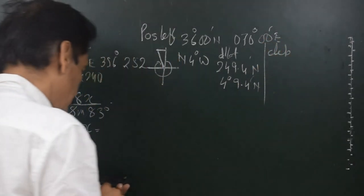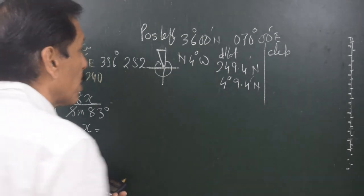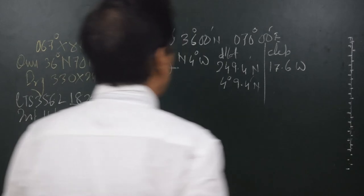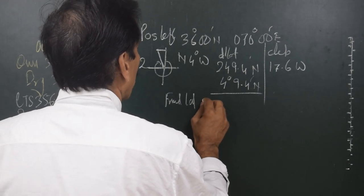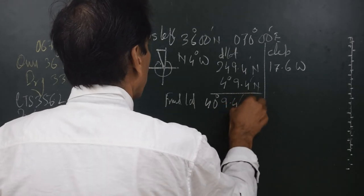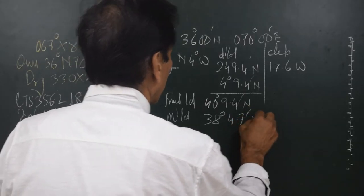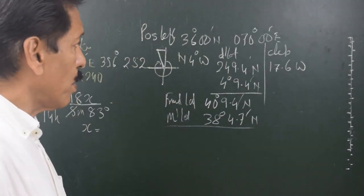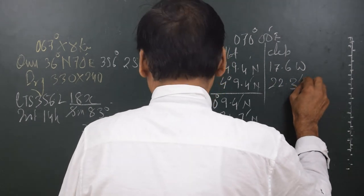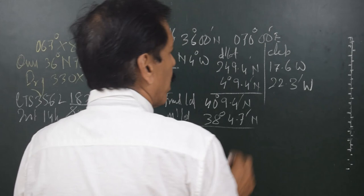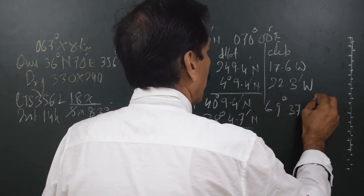Departure = 252 × sin(4°) = 17.6 minutes west. Mean latitude = 38°04.7'N. The purpose of mean latitude is to convert departure into DLONG: DLONG = 22.3 minutes west. Since longitude is east and DLONG is west, we subtract: 70°00' − 22.3' = 69°37.7'E.